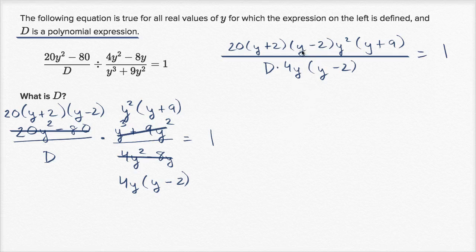Now let's think about it. We can divide, we have y minus 2 divided by y minus 2, so those cancel out. Let's see, we can divide the numerator and the denominator by y, so that would just become 1, and then that would just become a y to the first power.